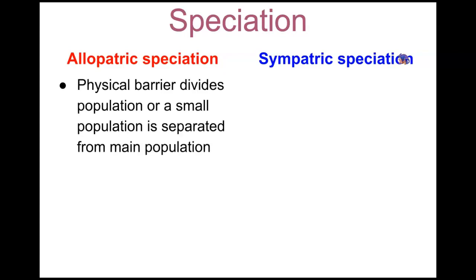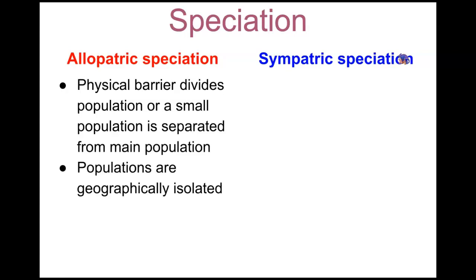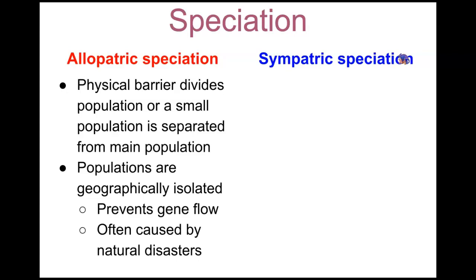Taking a look at allopatric versus sympatric speciation: in allopatric speciation, there's a physical barrier that divides — here's where we see geography. A physical barrier is going to divide a population, or a small population becomes separated from the main population. Ultimately the populations are geographically isolated, which prevents gene flow, and this is often caused by natural disasters.